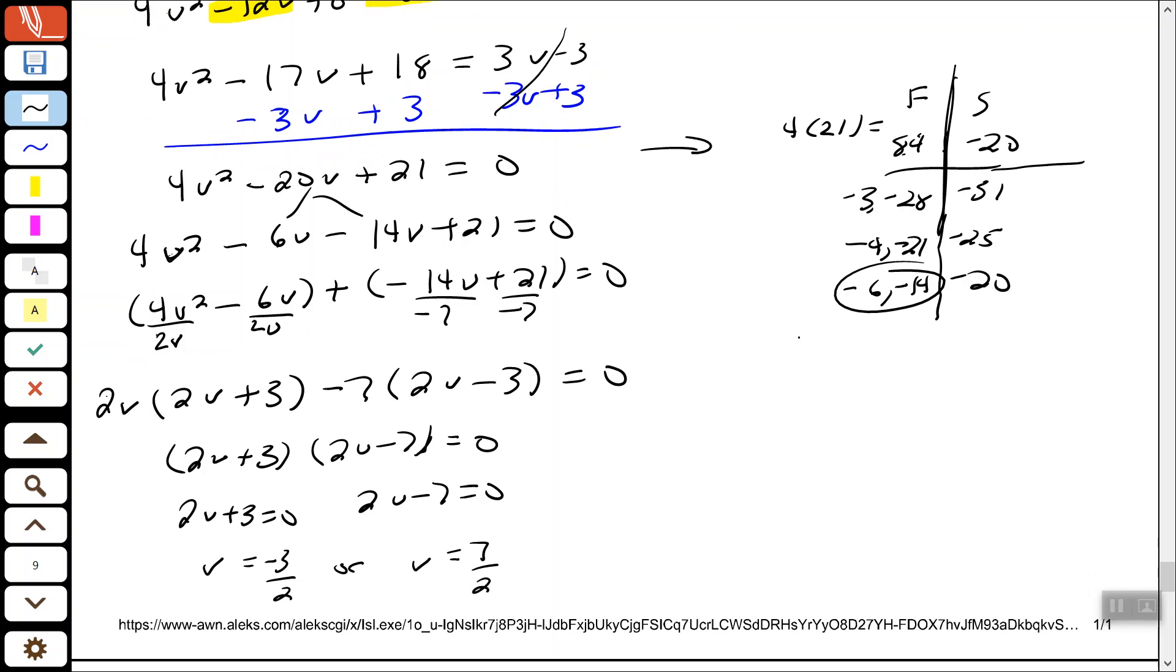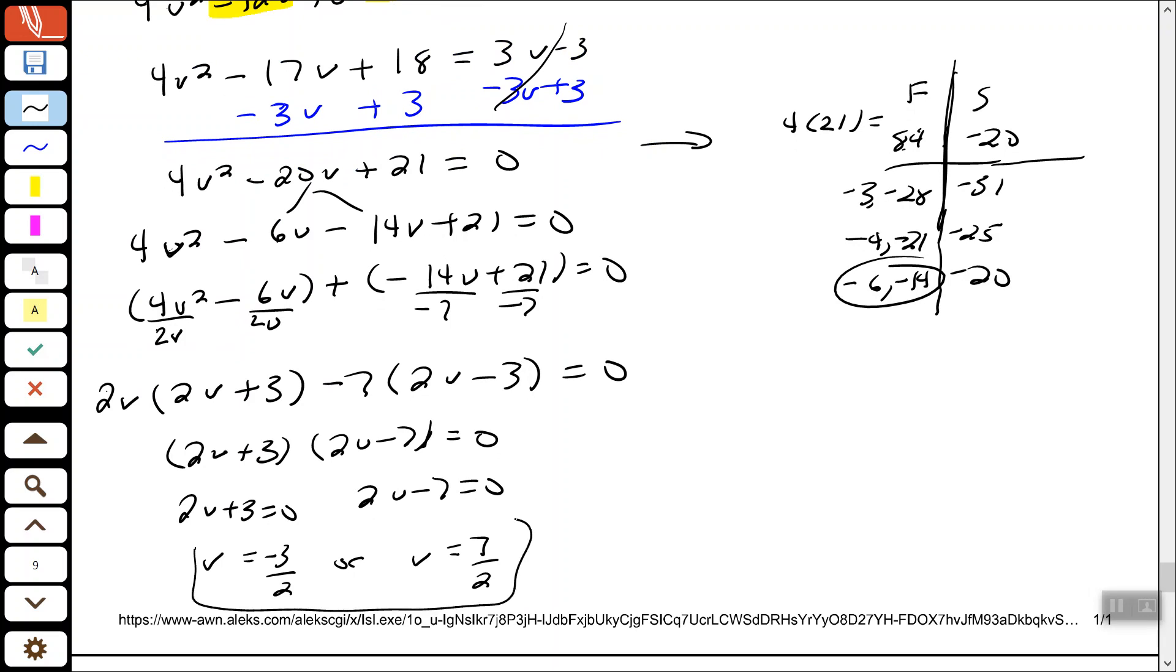Neither one of those are the excluded values. I think the computer would want you to write those as negative 3 halves comma 7 halves.